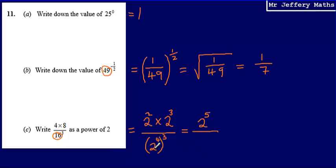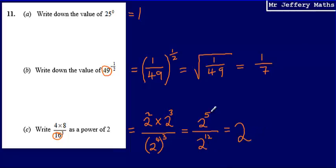Then I've got 2 to the power of 4 raised to the power of 3, which gives me 2 to the power of 12. So now I've got 2 to the power of 5 divided by 2 to the power of 12. When dividing indices, I subtract the powers — so 2 to the power of 5 minus 12 gives me 2 to the power of negative 7. So the final answer is 2 to the power of negative 7.